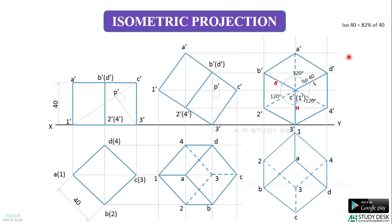The lengths parallel to all the axes get reduced to 82%, so this is also ISO 40 and this is also ISO 40. For example, if I take the isometric axis H, then D4, A1, B2 are all parallel to H, so the length of all these sides gets reduced to 82% and all these sides will be ISO 40. Similarly, the sides parallel to L are 3-4-2-C-B-A — all get reduced to ISO 40. And the lengths parallel to B direction, that is AD, 23, and 14, all get reduced to ISO 40.